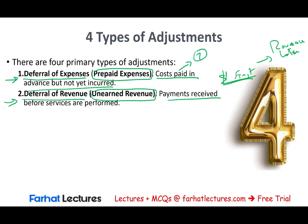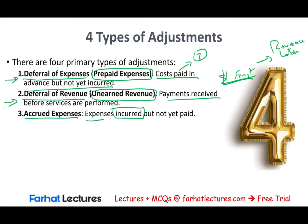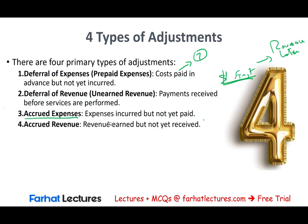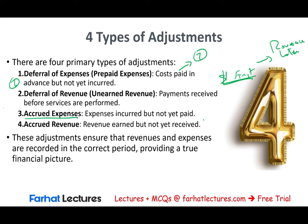With unearned revenue, you receive the money first and recognize the revenue later. We will have dedicated sessions for each type. The third type is accrued expenses — expenses that have been incurred but not yet paid. The fourth type is accrued revenues — revenues that have been earned but not yet received in cash. We did the work but haven't received the cash yet. We will have sessions covering deferral of expenses, deferral of revenue, accrued expenses, and accrued revenues, plus a comprehensive example.